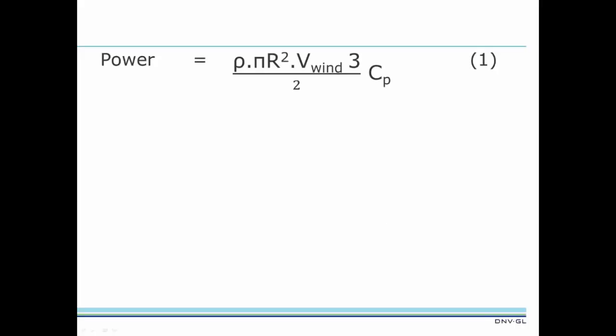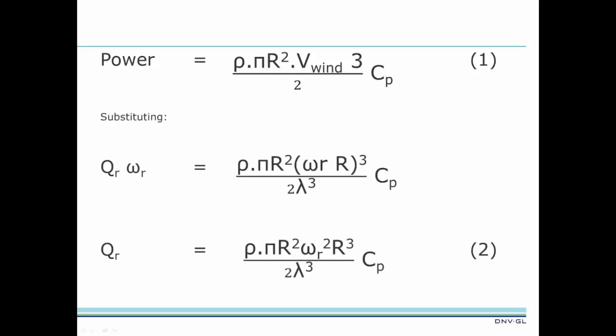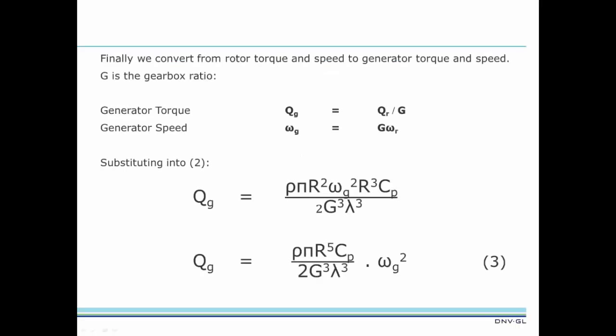Equation 1 is our original mechanical power formula. Substituting the new expressions for power and wind speed into equation 1, we have a new expression for rotor torque in terms of rotor speed and tip speed ratio, Equation 2. Finally, we convert from rotor torque and speed to generator torque and speed using the gearbox ratio, big G.